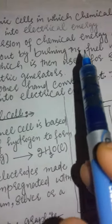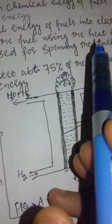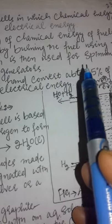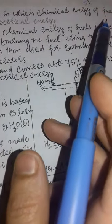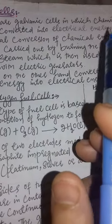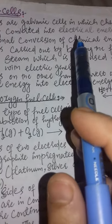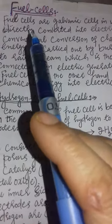Conventional conversion of chemical energy of fuels into electrical energy is carried out by burning the fuel — using heat energy to raise steam, which is then used for spinning turbines connected to an electric generator. In fuel cells, however, just like in electrochemical cells, there is an interconversion — chemical energy is directly converted into electrical energy, but here we use fuels.